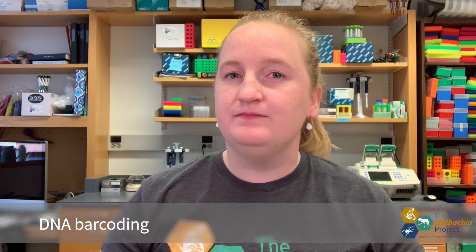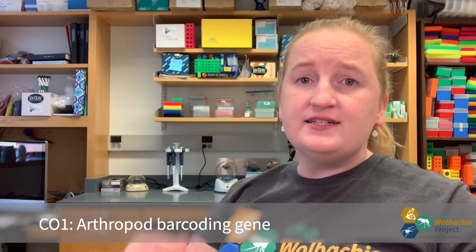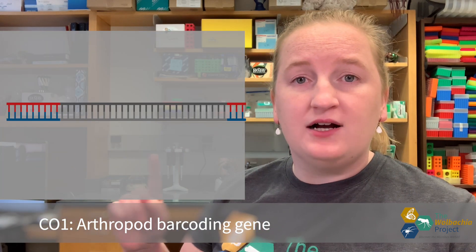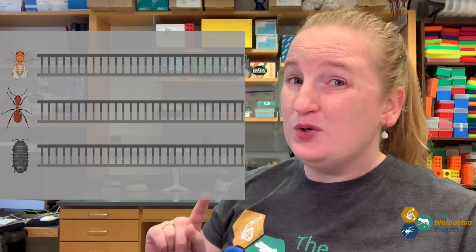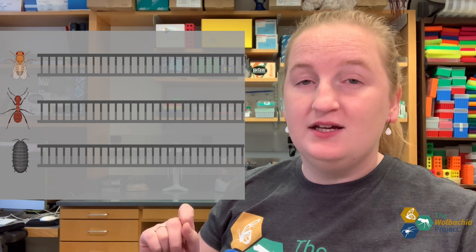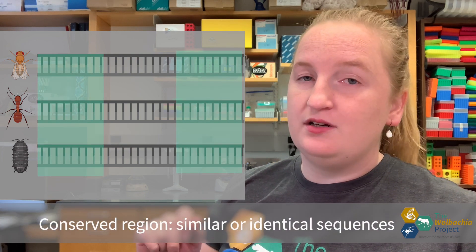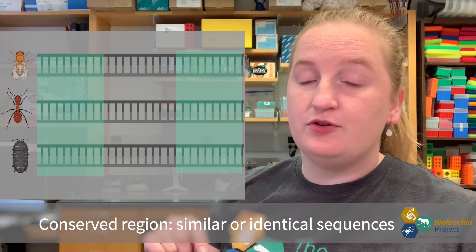That's the process of barcoding. So how are we going to barcode our arthropods? This is a fragment of the cytochrome oxidase 1 gene. All arthropods have this gene, and most of it is exactly the same. That's called the conserved region, where it's the same for almost every arthropod.